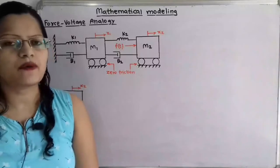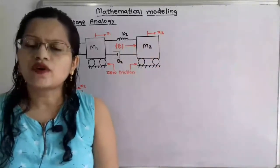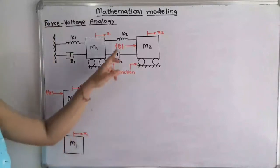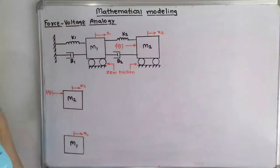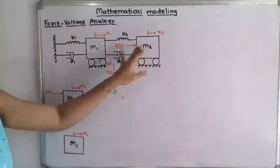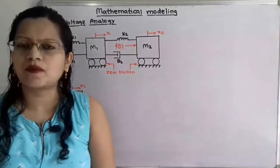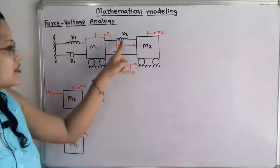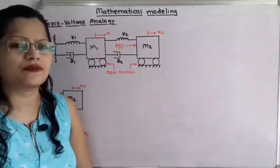Let us first draw the free body diagram. If we observe this system, the applied force F(t) is on mass M2. So we will first take the free body diagram for mass M2. Force is applied towards the right-hand side direction and displacement X2 is in the same direction. Now, which elements are responsible for the reaction forces? If we observe mass M2, there is the inertia due to M2, then spring K2 and damper B2 are also responsible for the reaction force because these elements are connected to mass M2. We have to show these reaction forces in the opposite direction of the action force.